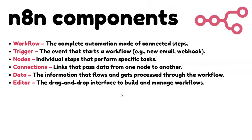The first N8N component is the workflow — a place where you build your complete automation, made up of connected steps. There will be a trigger. In automation, we used to use cron jobs to schedule tasks — if you want to run a task every day at 10 AM, you'd schedule it with cron. Instead, you can use a trigger node in N8N, which helps you automate or run your entire workflow at a specified time.